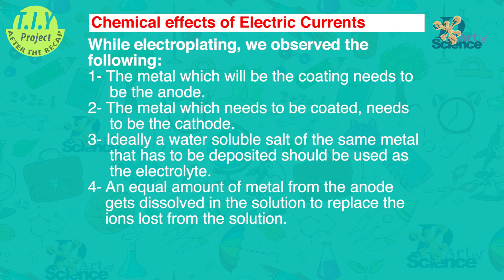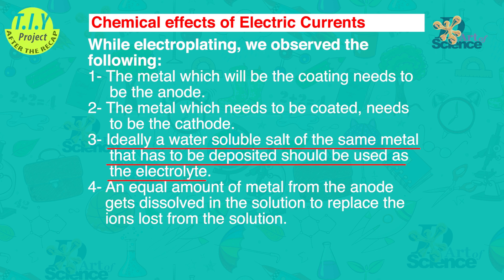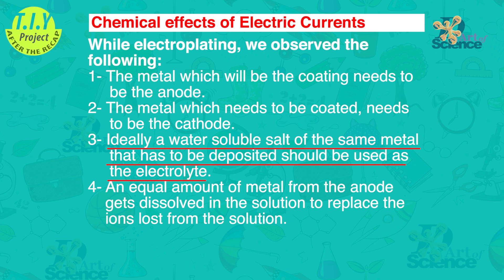While electroplating, we observed the following. 1. The metal which will be the coating needs to be the anode. 2. The metal which needs to be coated needs to be the cathode. Ideally, a water soluble salt of the same metal that has to be deposited should be used as the electrolyte.